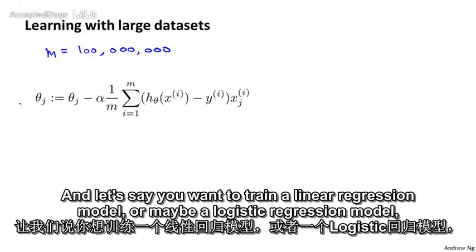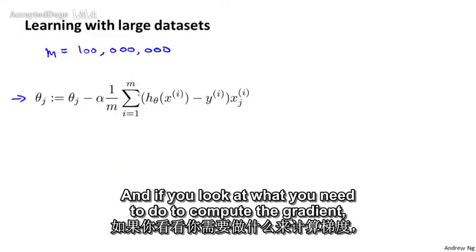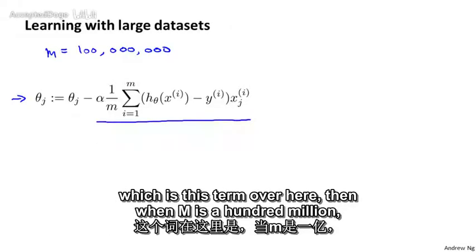And let's say you want to train a linear regression model or maybe a logistic regression model. In which case, this is the gradient descent rule. And if you look at what you need to do to compute the gradient, which is this term over here, then when M is a hundred million,